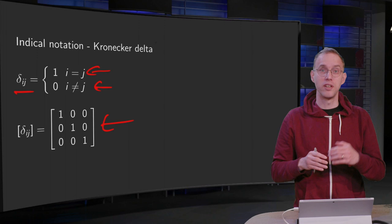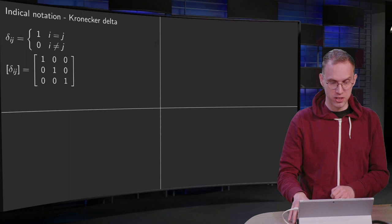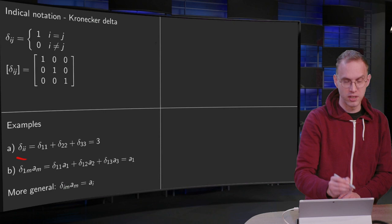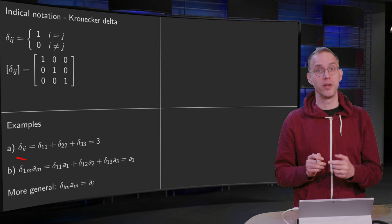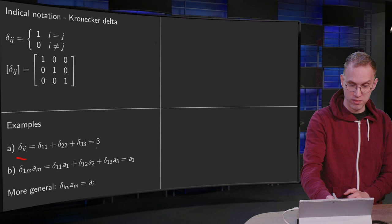So how can we use this? Let us do a few examples. What happens if we compute delta ij? Here we have to sum over i, so we get delta 11 plus delta 22 plus delta 33, and those are all 1, so that gives us a 3.